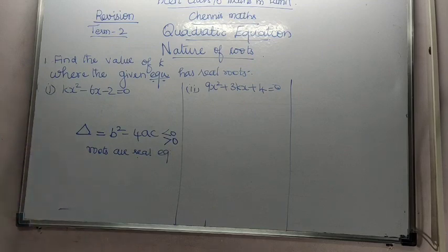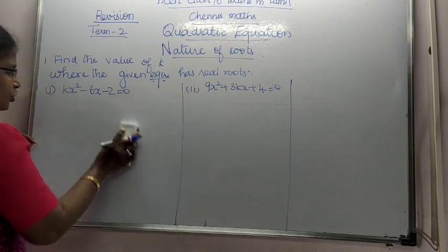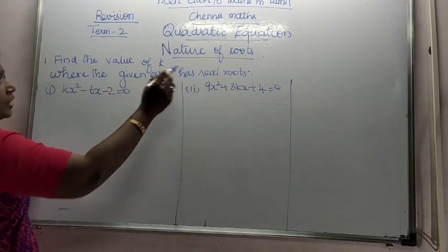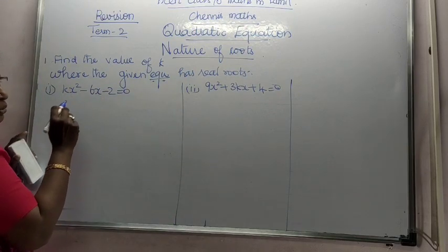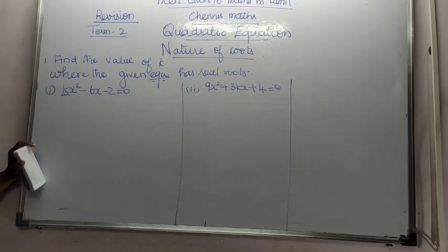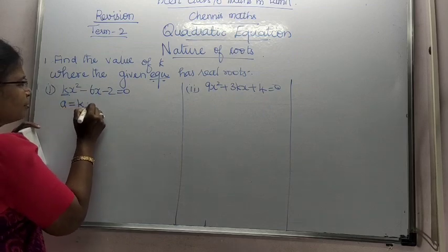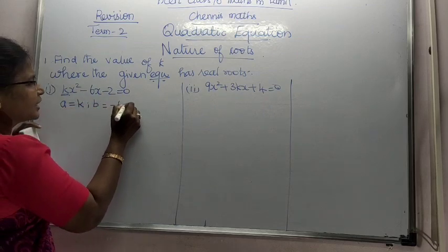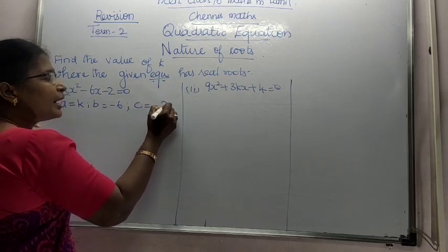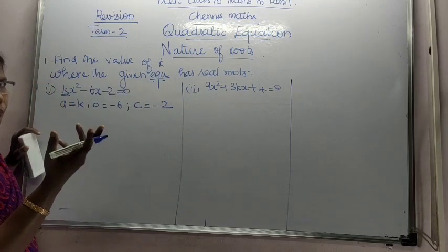If we are going to find out according to the given condition, it has real roots. We are going to find out the unknown value k. Now here a is equal to k, b is equal to minus 6, c is equal to minus 2.